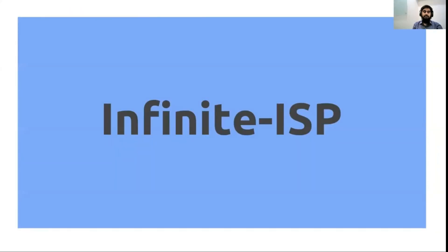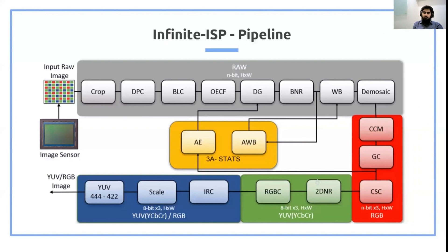So now let's see what Infinite ISP is. You might be wondering what is in the ISP that converts that green, dark raw image into the beautiful image we see as an output. Every ISP has a series of algorithms that are responsible for all the processing. Here you can see the pipeline of Infinite ISP. It processes the input image in three domains: the raw image domain, the RGB domain, and the YCbCr — or commonly YUV — domain. Each of these blocks has algorithms that are specially engineered to process and convert the raw image into visually pleasing output images.